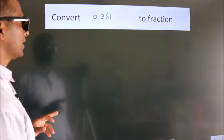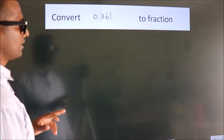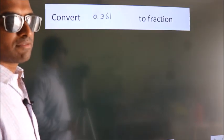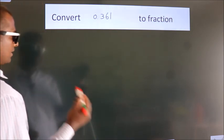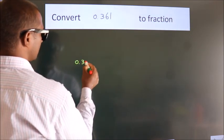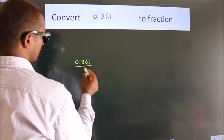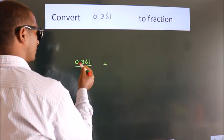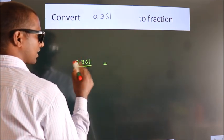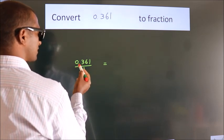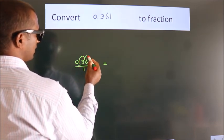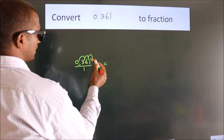Convert 0.361 to a fraction. Given is 0.361. To convert this to a fraction, we have to move this decimal after 1, 2, 3 numbers.